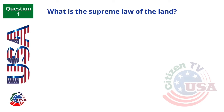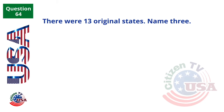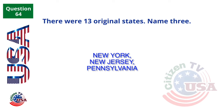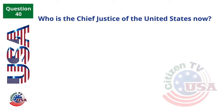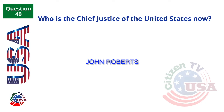What is the supreme law of the land? The Constitution. There were thirteen original states; name three. New York, New Jersey, and Pennsylvania. Who is the Chief Justice of the United States now? John Roberts.